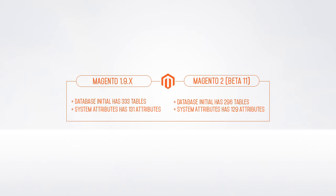So to migrate from Magento 1 to Magento 2, you're going to first need to migrate the database. In this tutorial, we'll introduce you to a cool new tool to handle all that, and cover the three simple steps to a successful Magento migration.